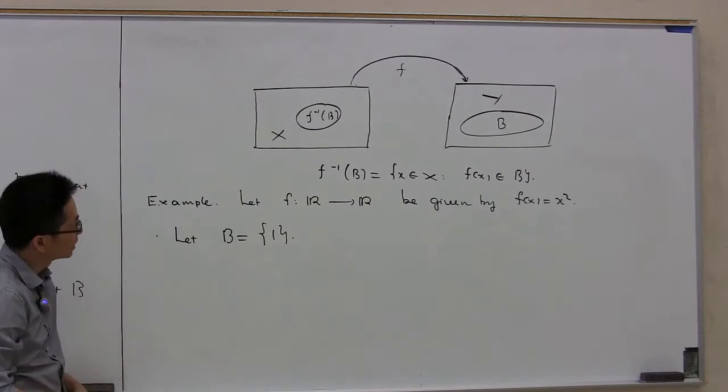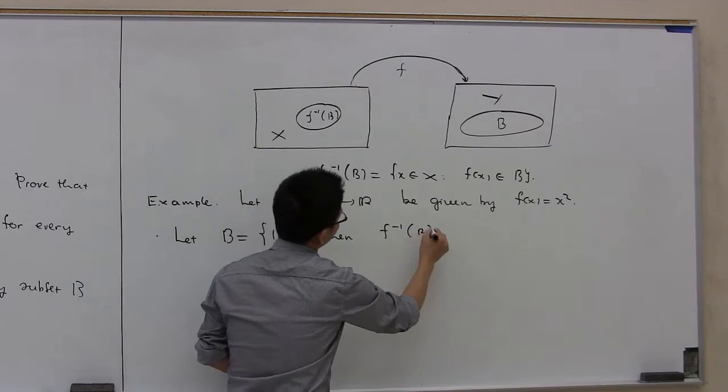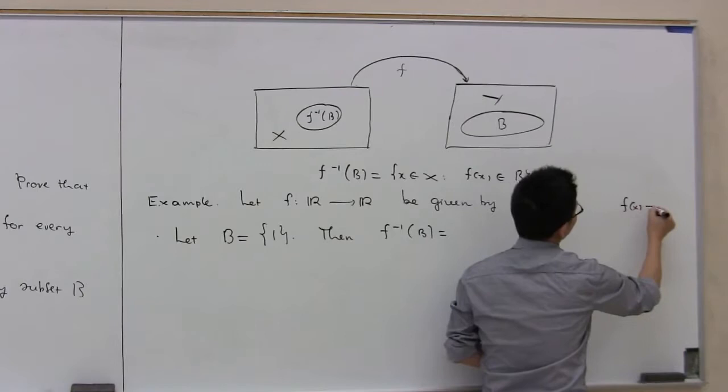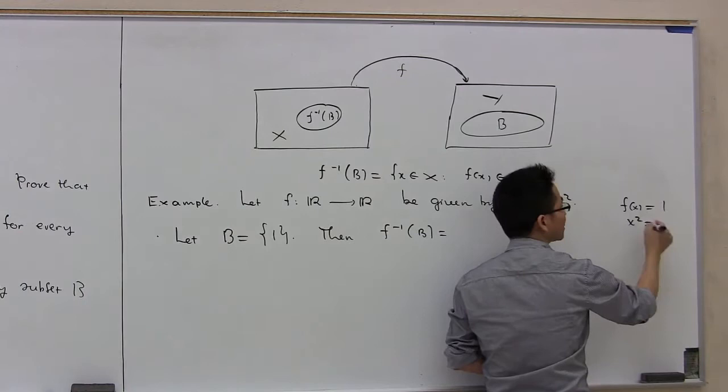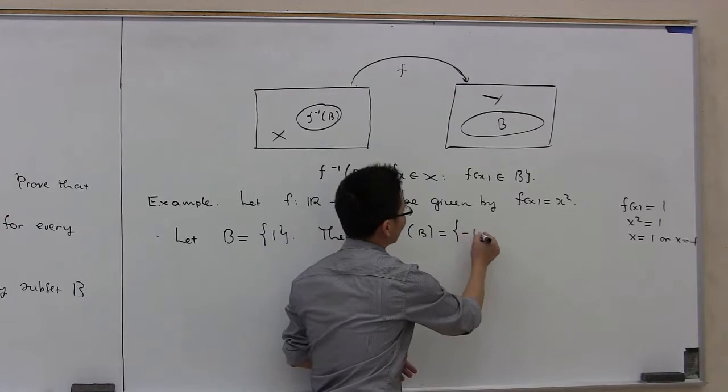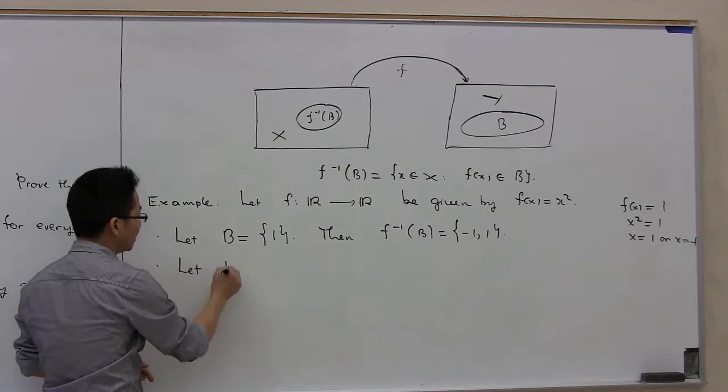B consists of only the number 1. To compute f inverse of B, we find all x such that f of x belongs to B, meaning f of x equals 1. We solve the equation x squared equals 1 and get x equals 1 or x equals -1. Therefore, f inverse of B consists of two numbers: -1 and 1.